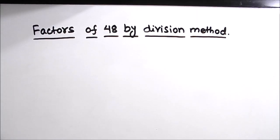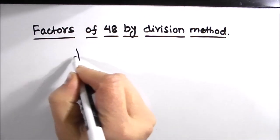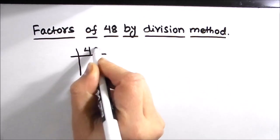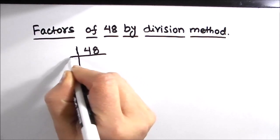Hello students. In this video we are going to learn how to find the factors of 48 by the division method. We will be using the prime factorization method, where we divide the number by prime numbers. So let's divide 48 by prime numbers.